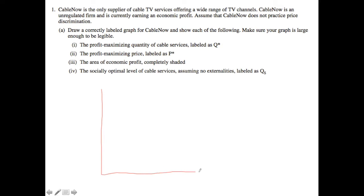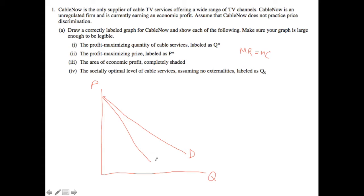We have our typical axes of price and quantity. What we want to think about is the profit-maximizing quantity of cable services, the profit-maximizing price, the area of economic profit, as well as the socially optimal level of cable services. Let's start by drawing a downward sloping demand curve. A monopolist will set MR equal to MC, where marginal revenue equals marginal cost. The marginal revenue is the derivative of the demand curve, so it'll have twice the slope. So this is your marginal revenue.